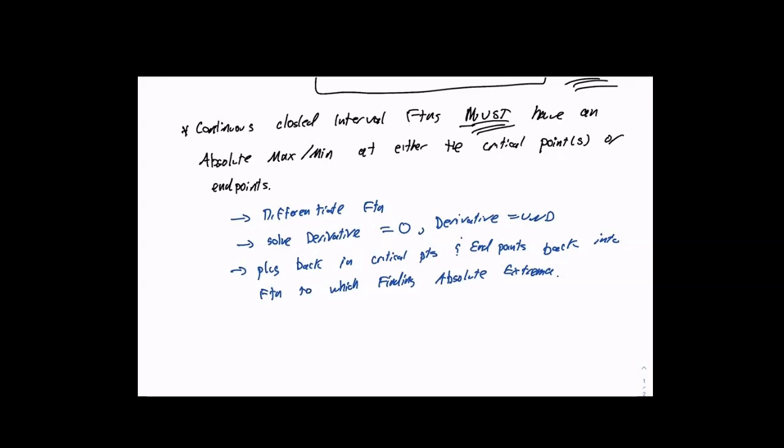Yesterday, I worded it specifically: you had the function f of x, then you took the derivative f prime of x, you set f prime of x equal to zero or undefined, and then you took those critical points and plugged them back into f of x. f of x was the function we were trying to maximize or minimize to find extrema.